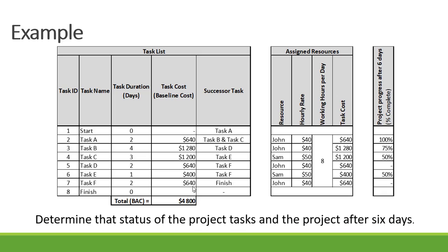Now let's determine the status of the project tasks after 6 days. Our status line is after day 6. Task A is 100% complete, task B is 75% complete, task C is 50% complete, task D hasn't started yet, task E is 50% complete, and task F hasn't started yet.